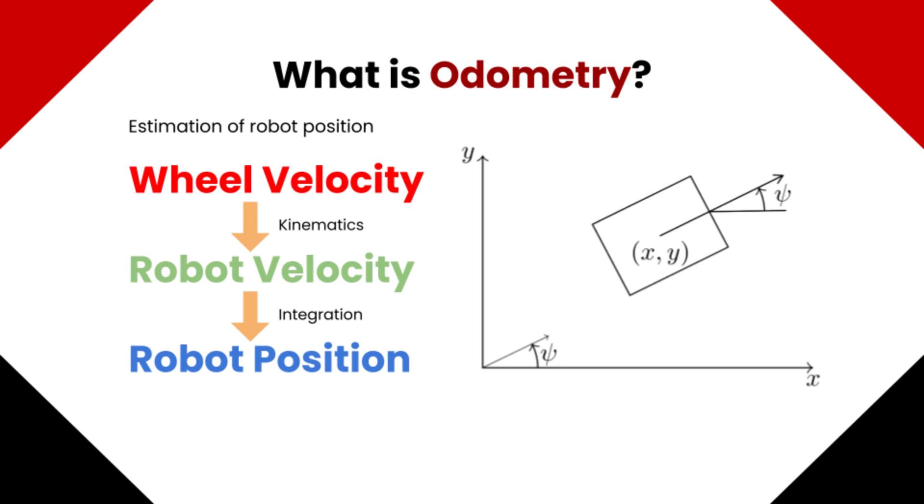The odometry wheels, or pods, are configured in such a way to give enough information to determine the position change of the robot. There are two main steps to odometry, kinematics and integration.